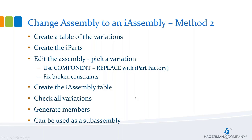The second method is if you have a regular assembly and decide to turn it into an iAssembly. You still create a table of variations, then convert your regular parts into iParts. You'll have to edit the assembly and use Component Replace to replace standard parts with the iPart factory. Fix any broken constraints, create the table, check all members, and generate the members. This iAssembly can then be used in your larger assembly.